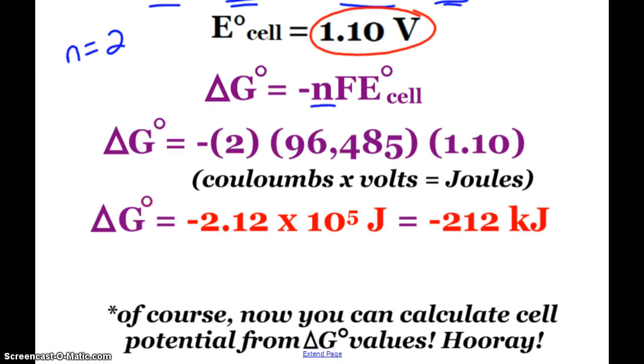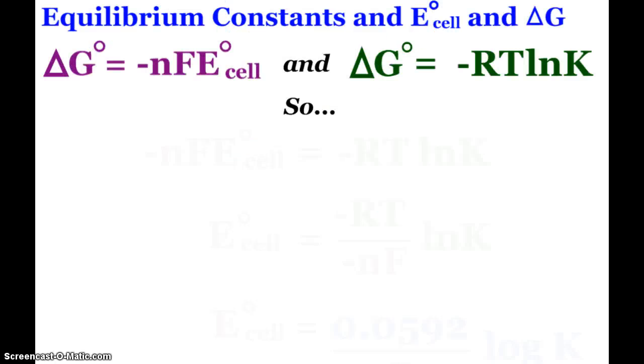Hip hip hooray, we can use our delta G values from our thermodynamic data, and we can use that to calculate cell potential as well. So lots of fun things can be done now that we know how to get cell potential, delta G, and all these different ways to get K.